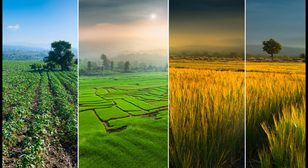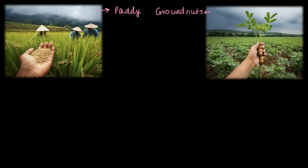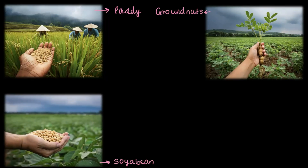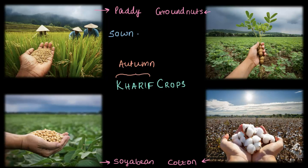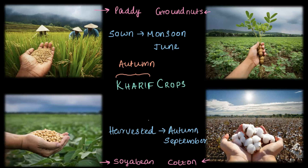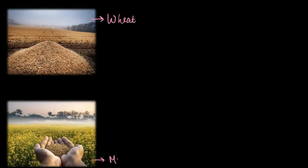These crops are classified based on the season in which they grow. For example, take a look here — we have paddy, which gives us rice, then groundnuts, soybean, and cotton. These crops love the monsoon season. The crops that grow during the monsoon or rainy season, from June to September, are called Kharif crops. In Arabic, 'Kharif' means autumn — because these crops are sown during the monsoon in June and harvested in autumn in September.